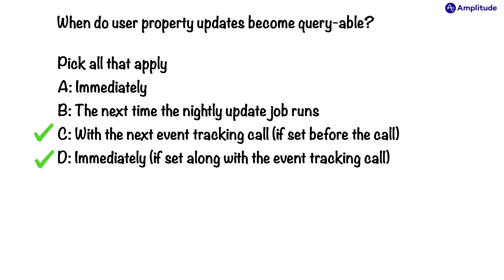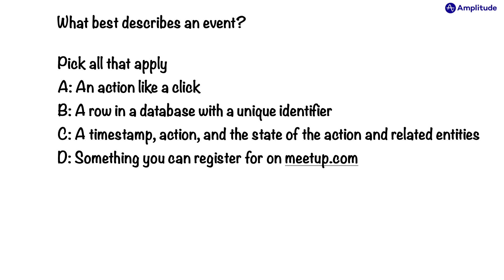Final question: what best describes an event? A, an action like a click; B, a row in a database with a unique identifier; C, a timestamp, action, and the state of the action and related entities; D, something you can register for on meetup.com. It could be a click, but A is incomplete — blindly tracking every click with no context doesn't really help. Although an event may show up in a database and does have a unique identifier, that doesn't really capture the essence, so not B. The right answer is C: a timestamp, action, and the state of the action and related entities. D would be fun, but it's not really the answer.